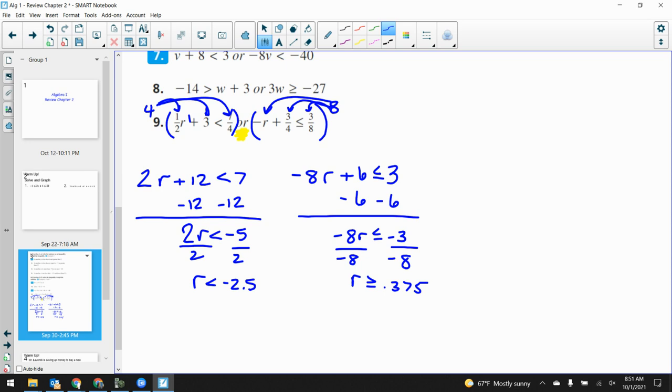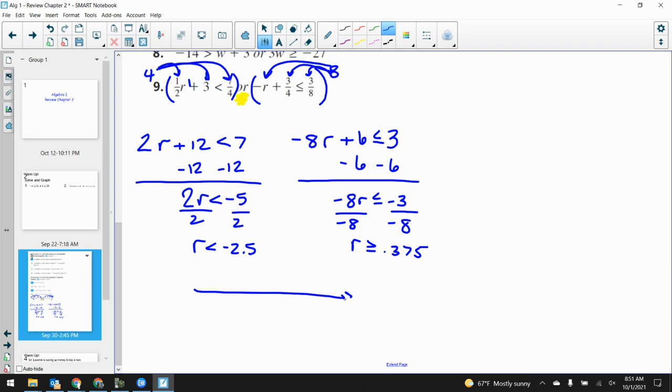Okay. Now when I go to graph it, let me ask you, do ors point out or in? Out. Remember, think oars on a boat. They point outward, right? They point into the water. Oars on a boat point out, so my arrows will also point out. Here's negative two and a half. Here's 0.375. Here's a closed dot at .375 pointing to the right. There's an open dot at negative 2.5 pointing to the left. They follow the same rules, like the arrows go in the same direction and everything. So that didn't change. That did not change.